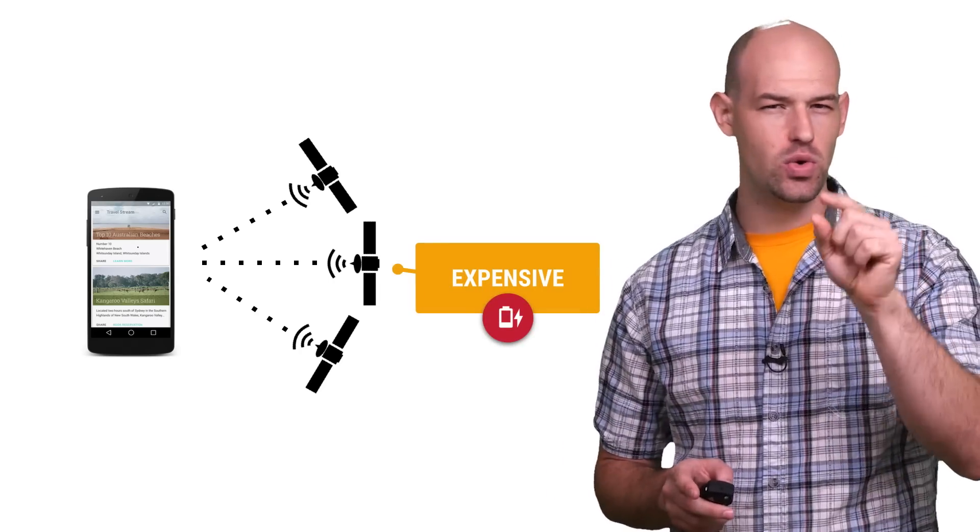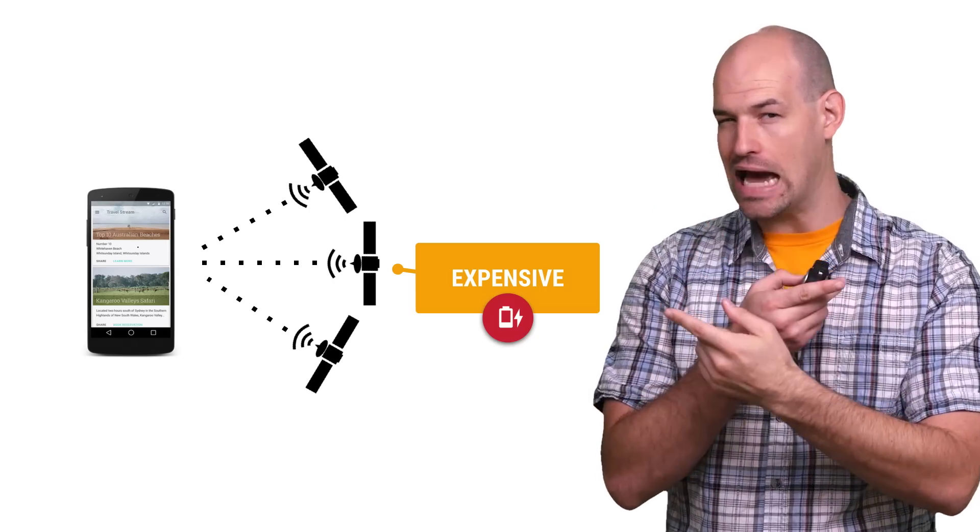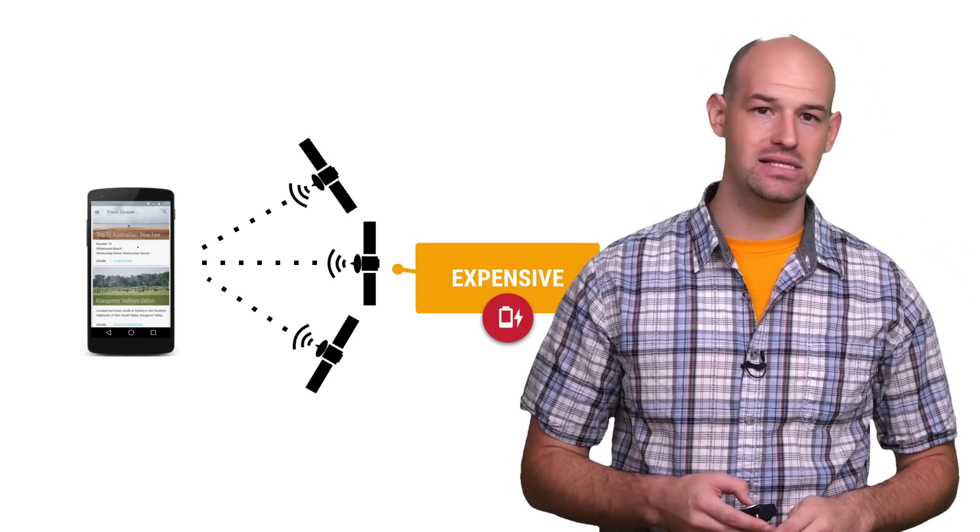The GPS hardware in your phone negotiates signals between the satellites and tower data to pinpoint your position in space and time.